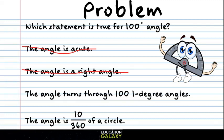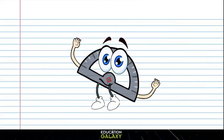The next answer choice says the angle turns through 100 1-degree angles. That's correct. Let's just check out the last answer choice to be sure. The angle is 10 360ths of a circle. But if that were true, it would be 10 degrees. So that answer choice can't be right. So it must be this one.